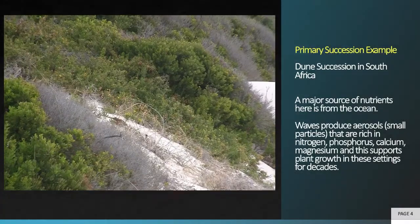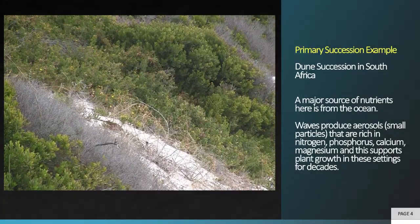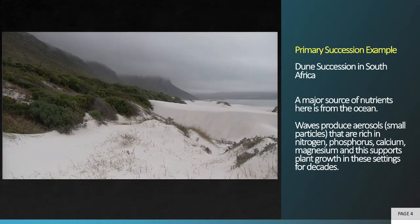Here's another example of primary succession from South Africa, where fresh beach sand is slowly colonized by plants. Over time, the plants will become more dense, the communities more diverse, and eventually you'll have a coastal Fynbos ecosystem rich in a variety of unique plant species. Some years ago, I worked at a site like this, and we found that for many decades, the major sources of nutrients to the plants actually came from the ocean in the form of small particles formed from crashing waves and carried by winds into these otherwise nutrient-poor sands. This allows the plants to grow and allows the communities to change over time.